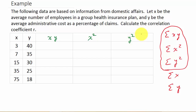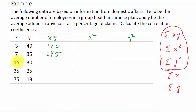Let's get the xy column. This just means x times y, so I'm going to multiply the x column times the y column. So 3 times 40 is 120. 7 times 35 is 245. 15 times 30 is 450. 35 times 25 is 875. And 75 times 18 is 1350. That takes care of the xy column.